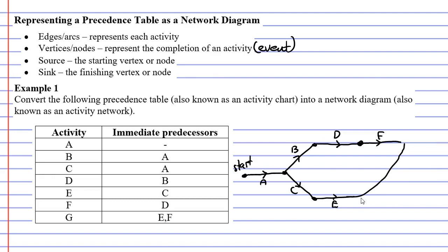I'm going to put down a single vertex which represents the completion of both edges E and F, or activities E and F on my diagram.